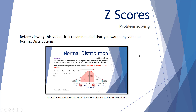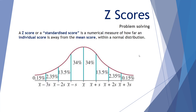Before we go any further, I do recommend you watch my video on normal distributions — it's a good starting point and what we're about to view will make more sense if you do so. A z-score, or as it's sometimes described a standardized score, is a numerical measure of how far an individual score is away from the mean score within a normal distribution.